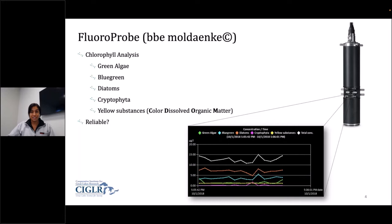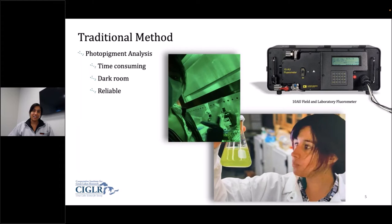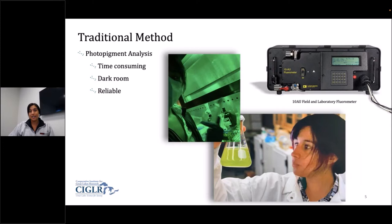The traditional methods to compare it to are photopigment analysis or using a fluorometer. This traditional method is time-consuming — you spend a lot of time in a dark room, messing with chemicals, liquefying the algae to get its contents, and then analyzing it. But it is very reliable, and there's a reason why it's the traditional method. So that brings us to our main question: how do these two compare? Are the fluoroprobe and the photopigment analysis methods comparable? And if they are, are we able to use the fluoroprobe measurements to estimate cyanobacteria concentrations? Because that's going to give us an idea of the impact that these harmful algal blooms will have in the ecosystem.